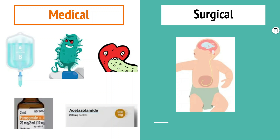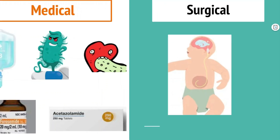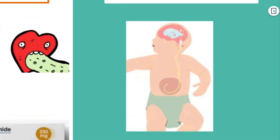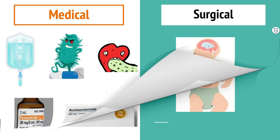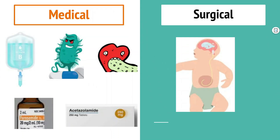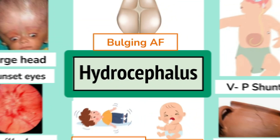Both drugs act to reduce production of CSF by the choroid plexus. The standard treatment for hydrocephalus is shunt placement. Shunts are usually placed in the lateral ventricle and can have one of three different drainage points. The most common drainage point is the peritoneum, which is connected to the shunt with subcutaneous tubing — this is known as a ventriculoperitoneal shunt. In some cases with tumours and infection, resolving the underlying condition will resolve the hydrocephalus.